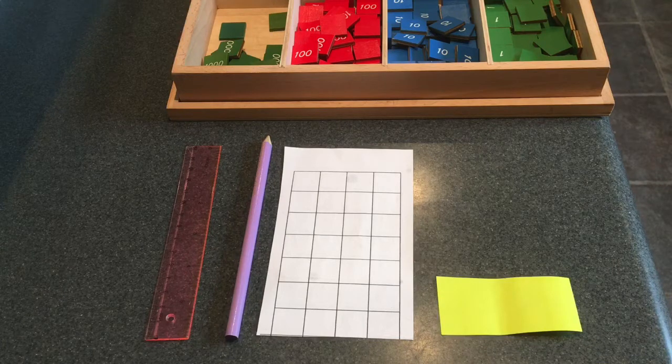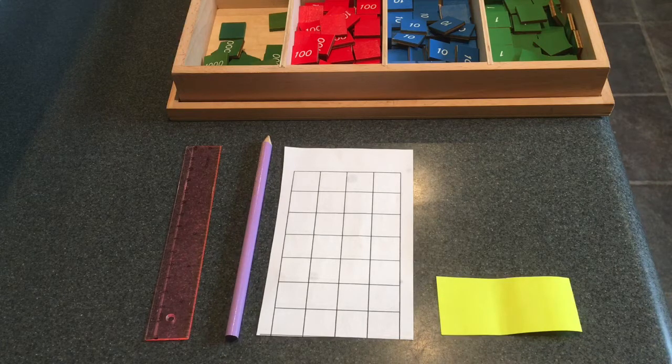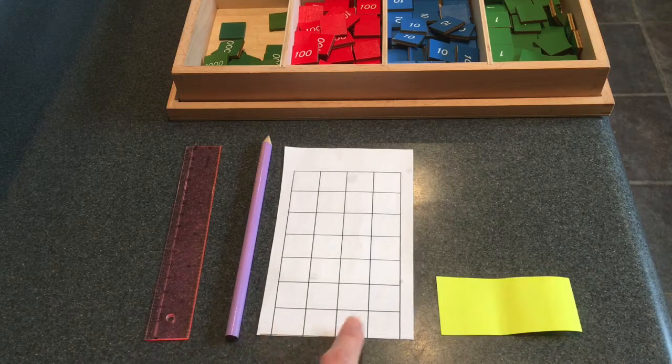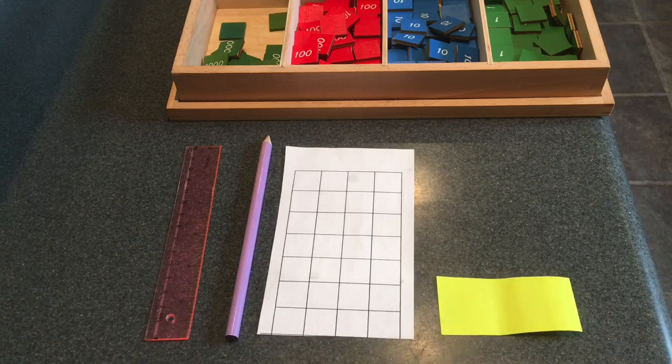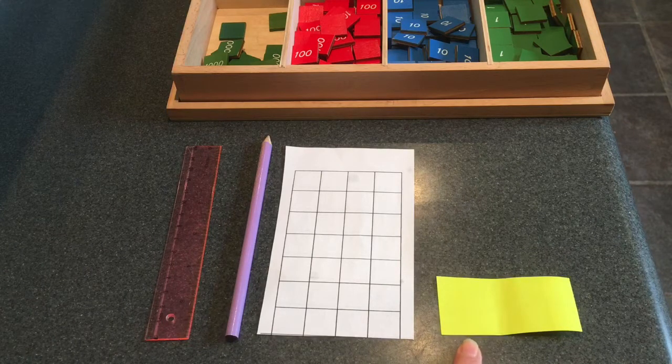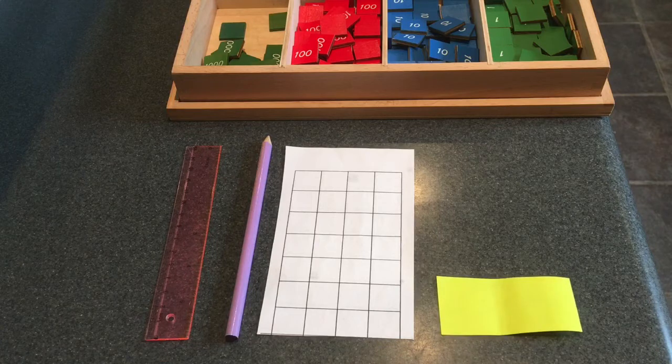Just like with static subtraction, I have my ruler, my pencil, my four grid paper, and a half of a post-it note. This is just one post-it that I cut in half. If you don't have post-its, you could just use a small piece of paper.